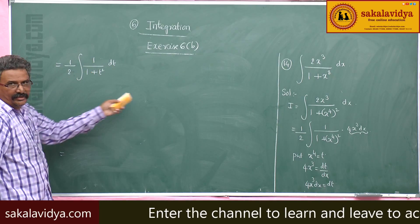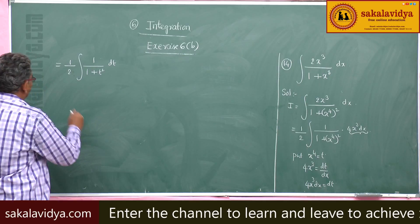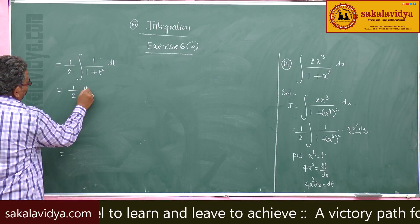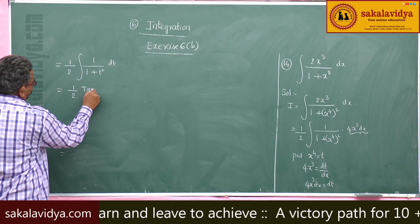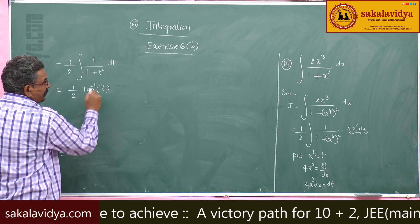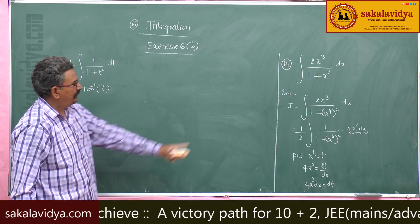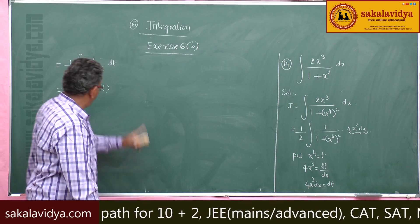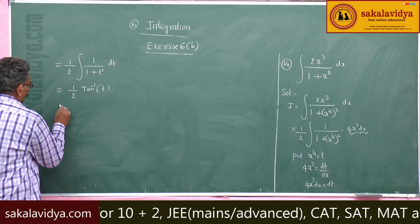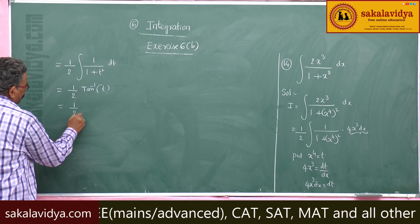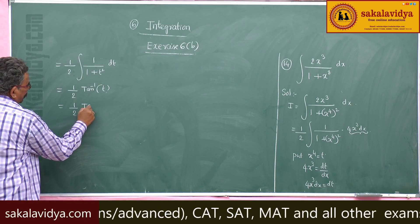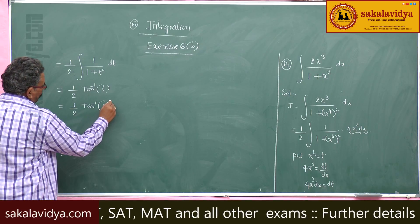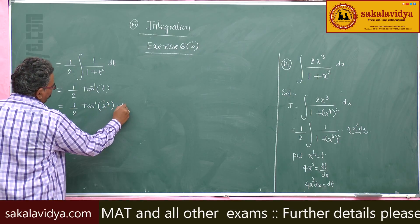This is a standard result. So this equals 1 by 2 tan inverse t. Since t is nothing but x to the power of 4, replacing it gives 1 by 2 tan inverse x to the power of 4 plus constant of integration.